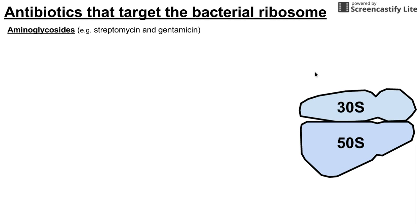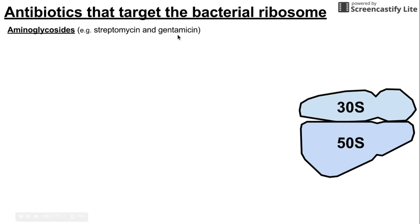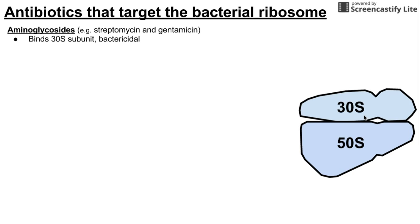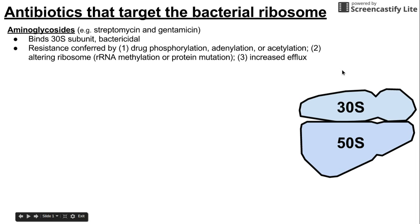The first class on the list are the aminoglycosides. Two commonly used examples are streptomycin and gentamicin. Aminoglycosides specifically target the 30S subunit and are bactericidal, meaning they actively kill bacteria rather than just stopping their growth.